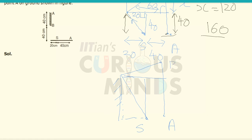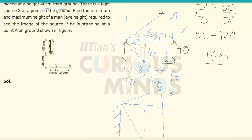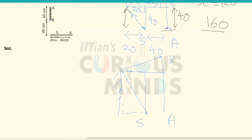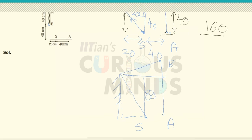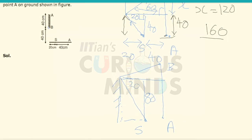Let this be point B, point A. If you consider from the ground point, point B was at a height of 40, so point A will be at a height of 80 centimeters. This distance is again 20, and this is again 60. The horizontal distance on the X axis is not changing. Let this distance be Y.